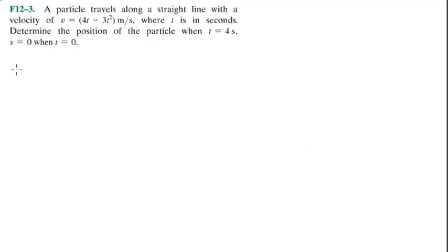Alright guys, now we're going to do problem 12-3-1. A particle travels along a straight line with a velocity of v equals 4t minus 3t squared meters per second. The speed of the car is reduced to 10 meters per second. Determine the position of the particle when t equals 4 seconds.